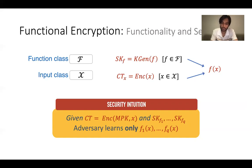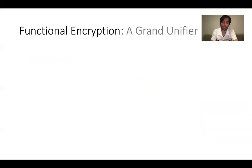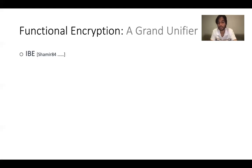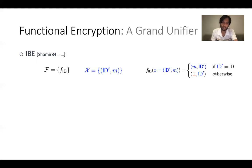FE has been a grand unifier, enabling placement of all previously known encryption systems under a single umbrella. For illustrative purposes, consider the simple example of identity-based encryption, introduced in 1984 by Adi Shamir. The goal of identity-based encryption is to let the encryptor only be aware of the recipient's identity instead of their exact public key.